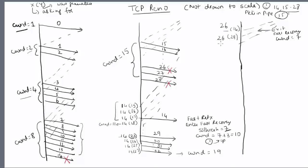You get another duplicate ACK from packet 30 and yet another from packet 31. These are three duplicate ACKs, so you conclude that 26 is lost, retransmit 26, and enter fast recovery again. This is also fast retransmit.